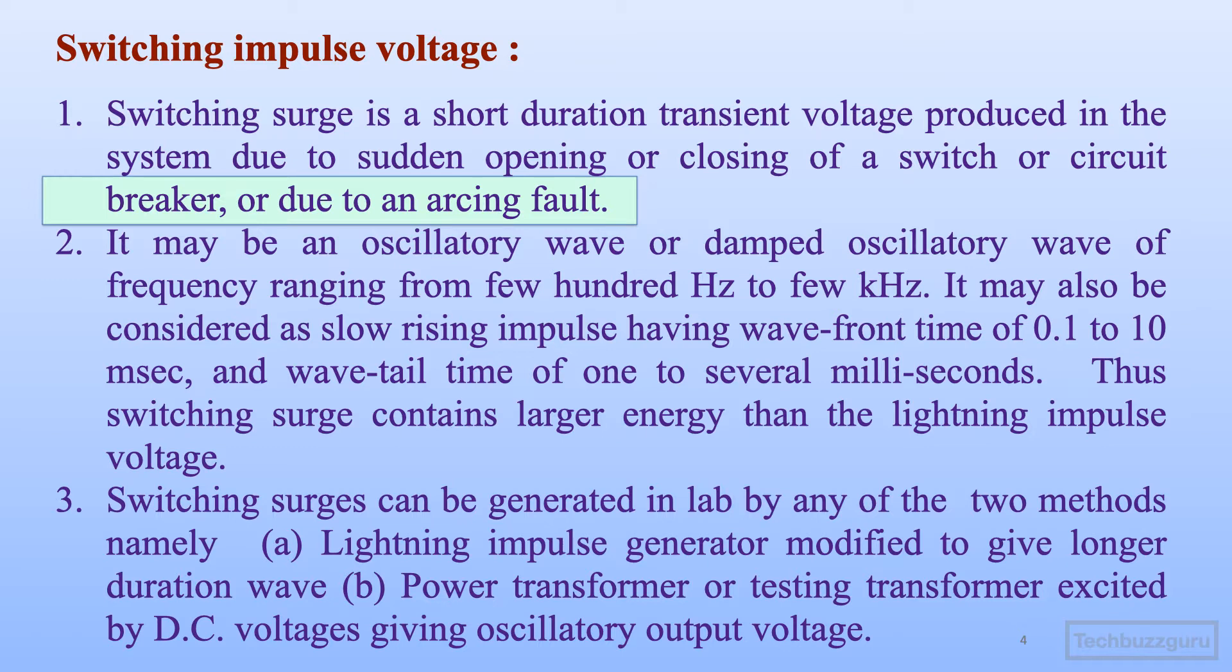Circuit breakers usually operate whenever there is a fault detected by a relay, so the unhealthy system is isolated from the healthy system. In the process, the healthy power lines or healthy part of the system may experience overvoltages known as switching surges.